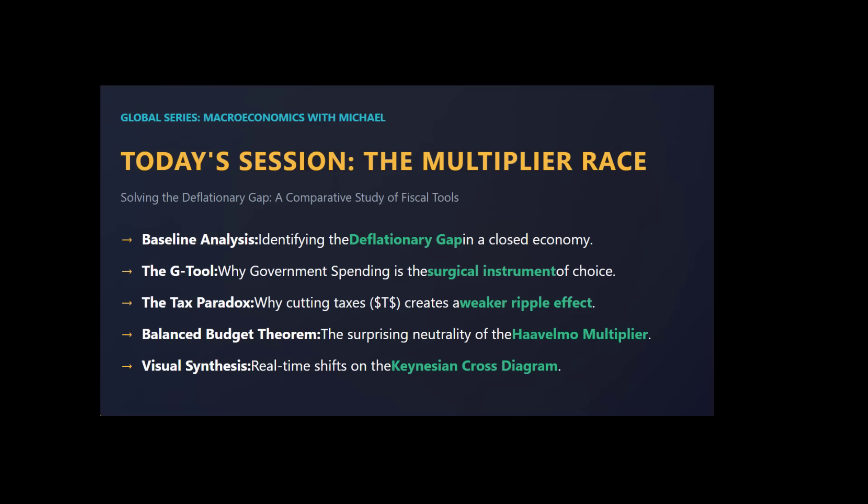We're diving right into the engine room here. This is the classic Keynesian model. We've got a really clear case study from a listener complete with all the numbers. Our mission is pretty specific: we have an economy with an output gap of 200 units to close, and we're going to compare three different policies that all involve the number 50. We're about to see how one single assumption about human behavior — just one number — changes everything.